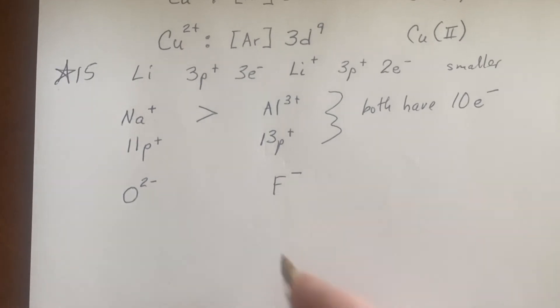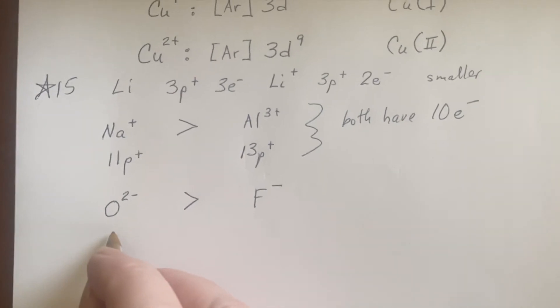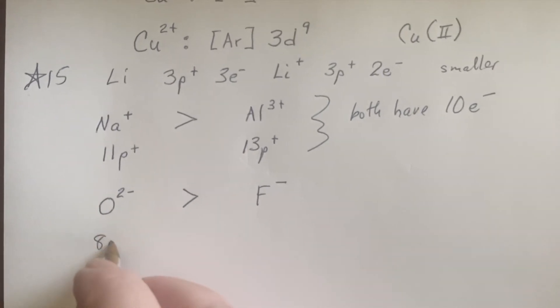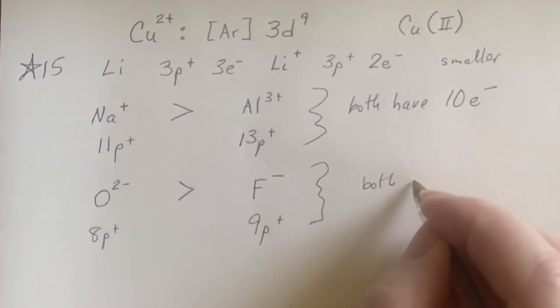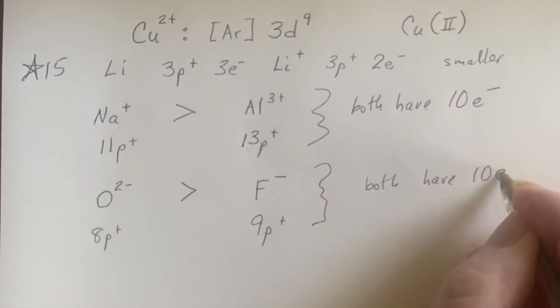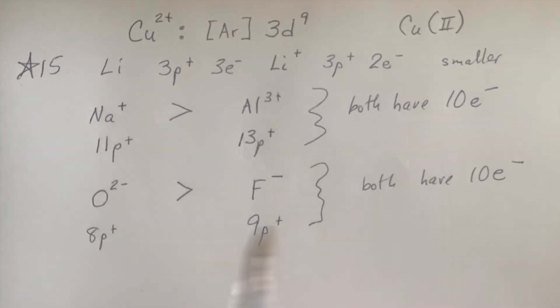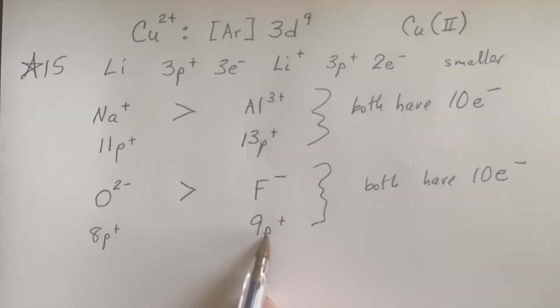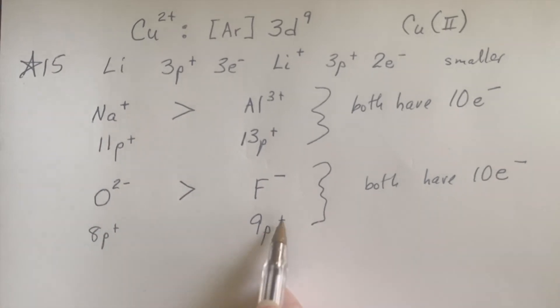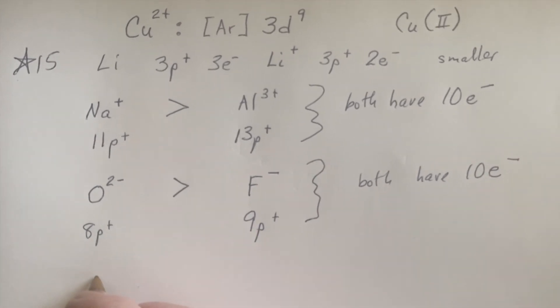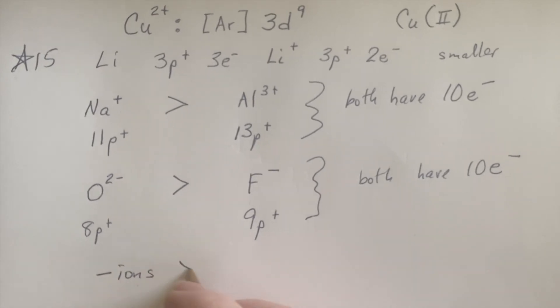You can also then go and look at oxygen as a minus two charge and fluorine with a single minus charge, and you're going to find out that this is true. We're talking here about having eight protons and this one having nine protons, and both of them have 10 electrons—again, isoelectronic with neon. So eight protons pulling on 10 electrons is not going to be as effective as nine protons pulling on 10 electrons, so it will end up being bigger than this one.